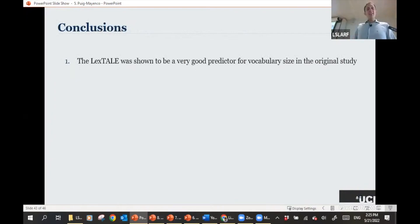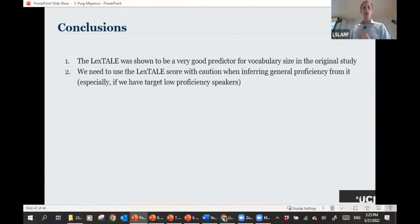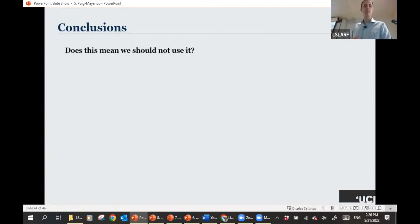So the LexTALE in the original study was shown to be a very good predictor for vocabulary size, especially in advanced participants, and especially so for the Dutch participants. So we need to use the LexTALE score with caution when we infer things about general global proficiency. And I think that that's been the problem in the literature, that we've taken the LexTALE to be something that was never meant to be, especially so when we look at pre-advanced participants, because the correlation was really low with intermediate learners. It's even lower and inexistent with beginner learners.